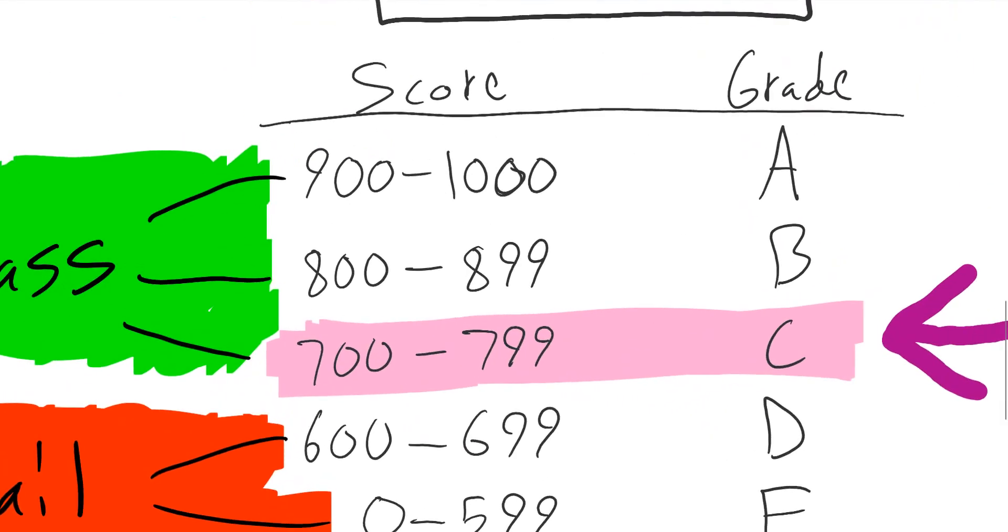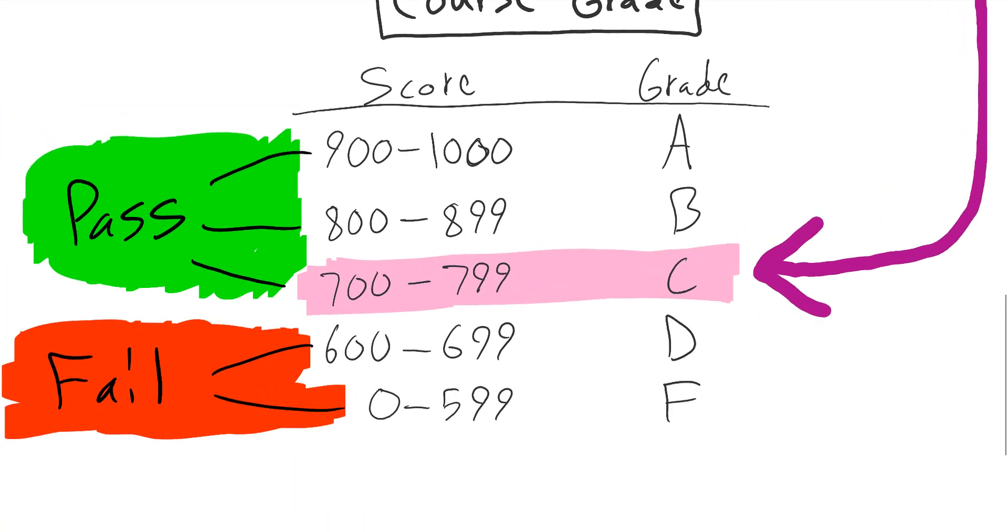And you might say, well, what if you got like 899.9? What if you got like a decimal here, like 0.5 or something? What do I do then? Well, you can just round up. If it's a 0.5, then that means you round up to 900. And if it's like a 0.4, that means you round down, which means you got a B. So that's how you can handle that situation.